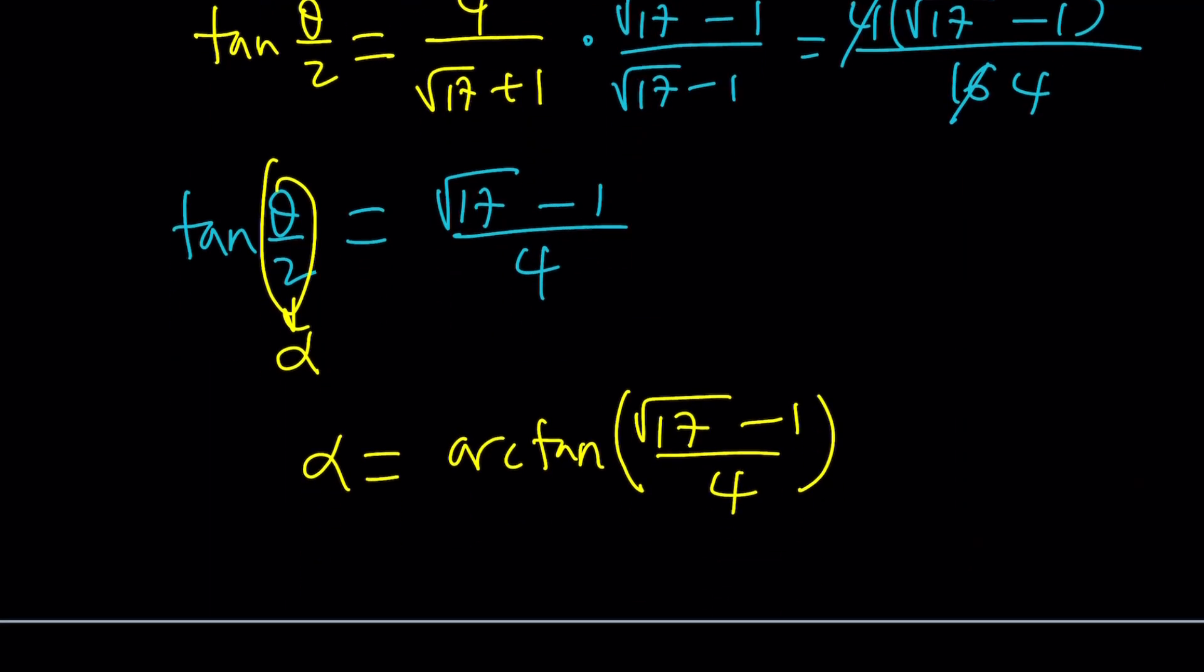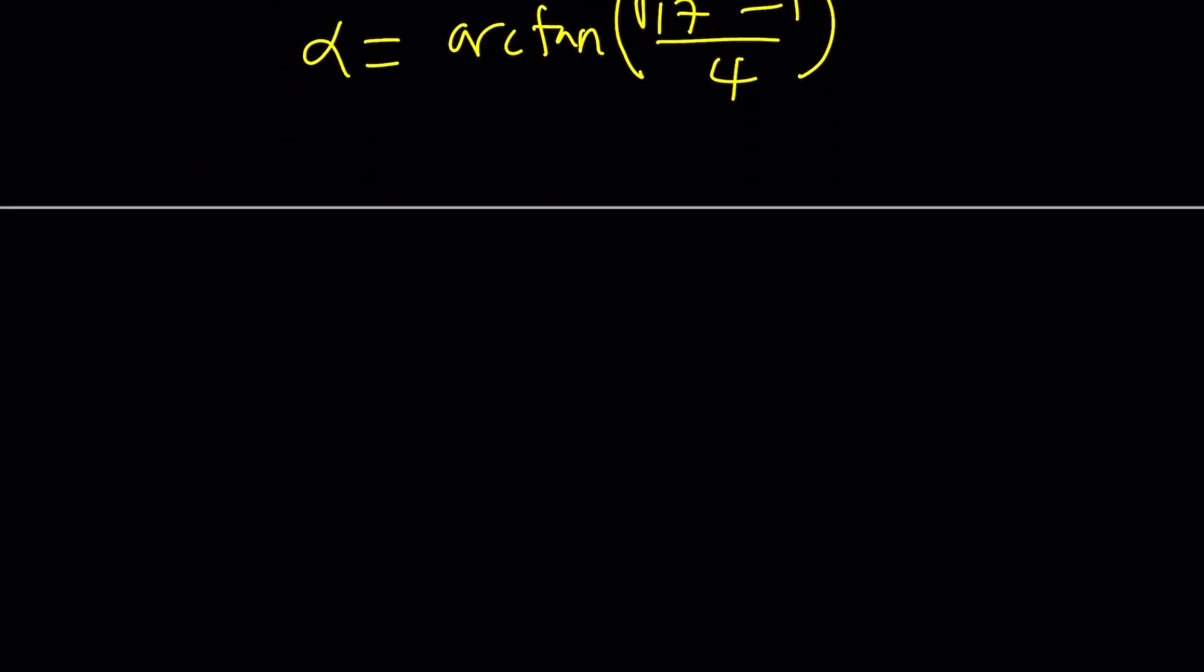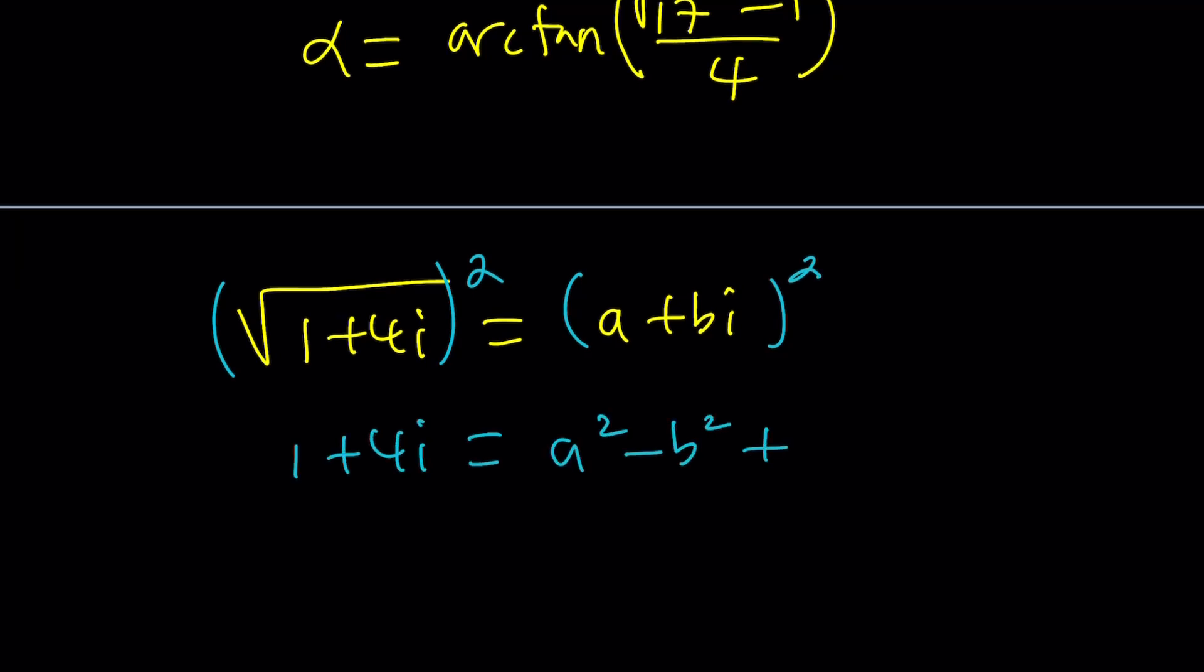So the angle whose tangent is 4 is not special, right? If tangent was 1 or square root of 3, I guess that would be a special one. But anyways, there is another way to approach this. Let me show you real quick because here's what we could have done. We could just set this to a plus bi because that's the name of this channel, right? And then square both sides.